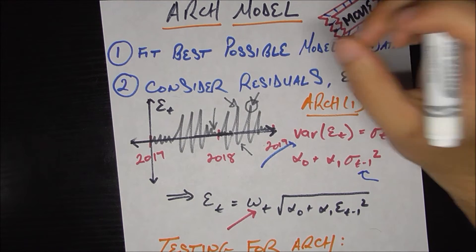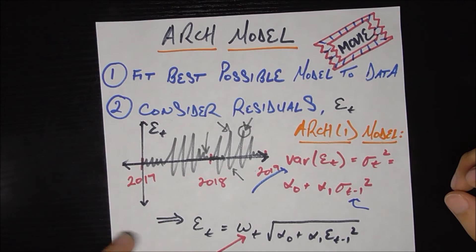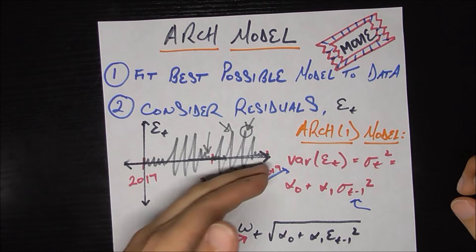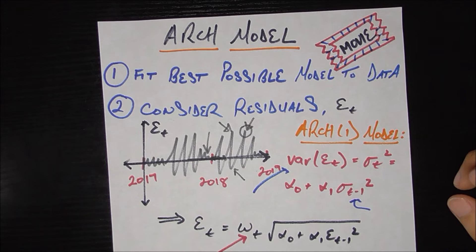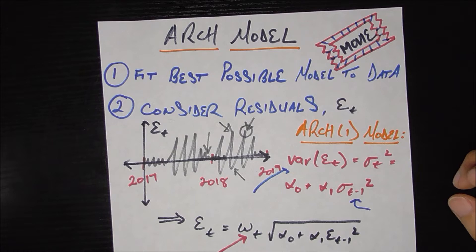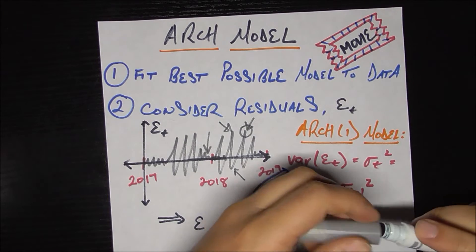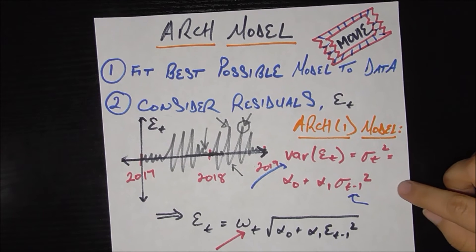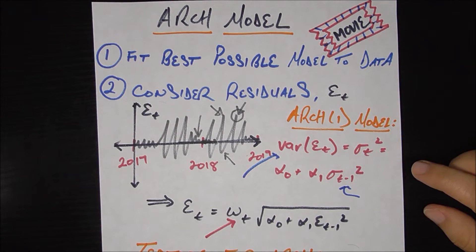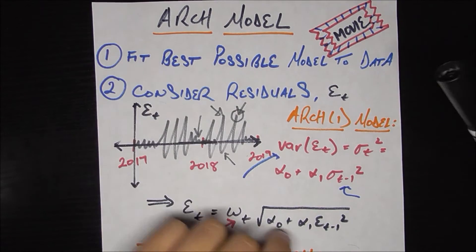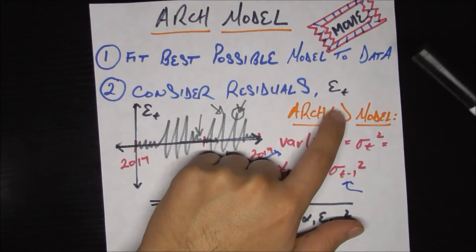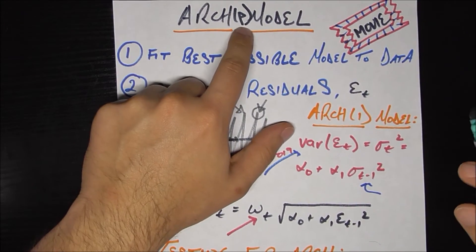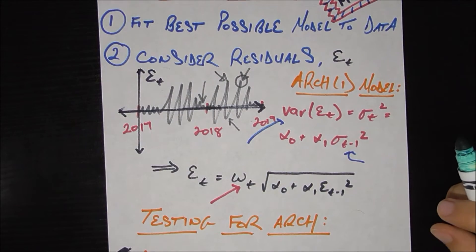And that's the crux of the ARCH model is that you go ahead and fit your best possible model first. You consider your residuals, if they look like there's different patches of volatility, then it could be a good candidate for an ARCH model. So now let's start talking about the mathematical formulation of the ARCH model. And in the interest of not getting too insane too fast, we're going to be talking about the most basic ARCH model, which is the ARCH(1) model. Note that in general, they're called ARCH(P) models, and we'll figure out how to generalize to P after looking at the first case.